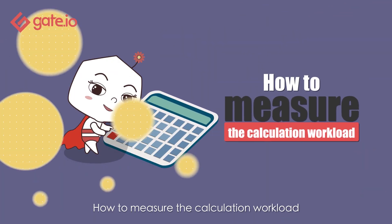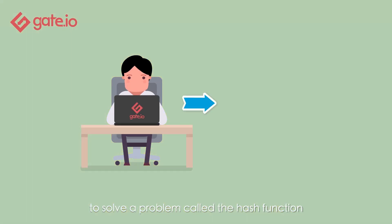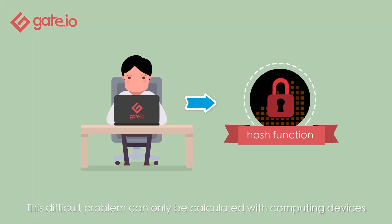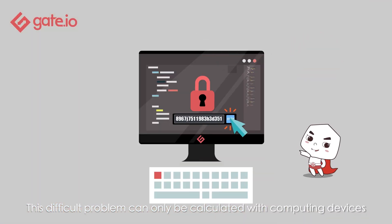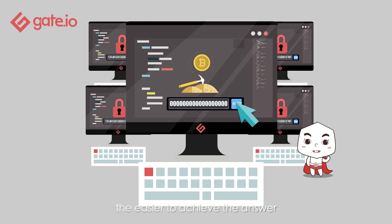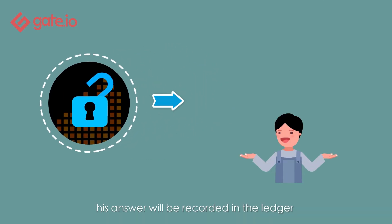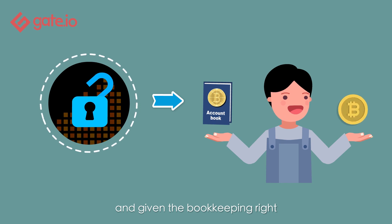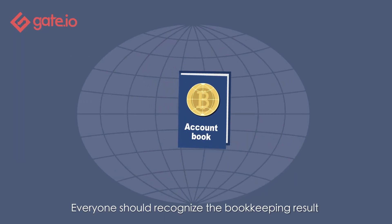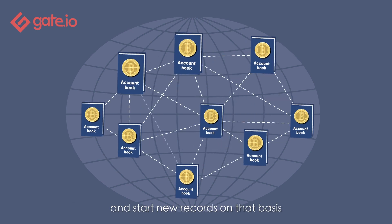How to measure the calculation workload: bookkeepers need to use computing power to solve a problem called the hash function. This difficult problem can only be calculated with computing devices. The stronger the computing power, the easier it is to find the answer. Once a bookkeeper finds the answer, it is recorded in the ledger, granting the bookkeeping right, and he also receives a Bitcoin reward. Everyone should recognize the bookkeeping result and start new records on that basis.